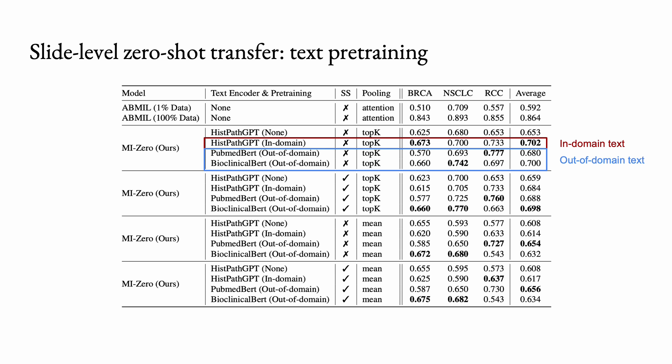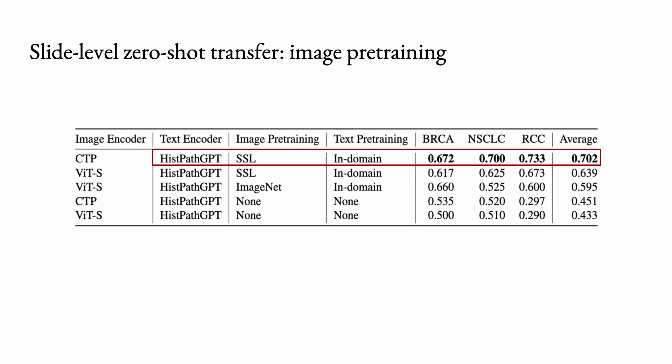We find that pre-training the text encoder improves performance over no pre-training, but pre-training on in-domain pathology text does not necessarily yield better performance. We also experimented with the choice of image encoder by comparing CTP to encoders based on the ViTS architecture, which has a similar parameter count. We evaluate both CTP and ViTS encoders initialized fully from scratch with no pre-training as an additional ablation study, and we find that pre-training both the image encoder and the text encoder performs best across all tasks.